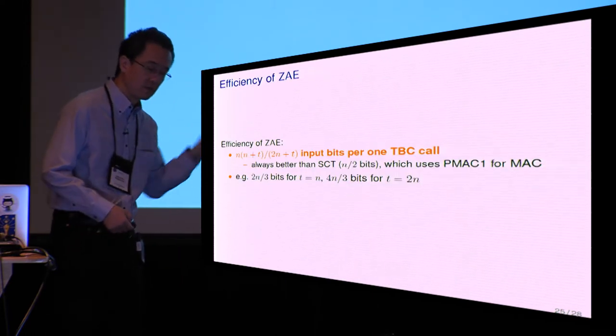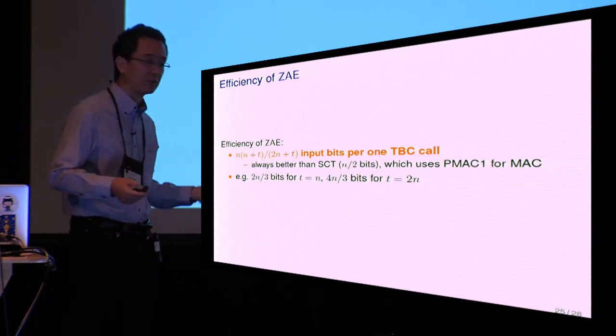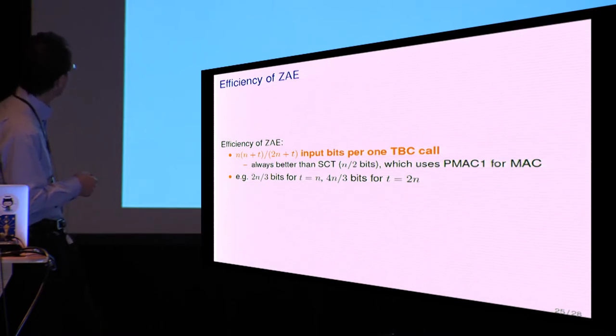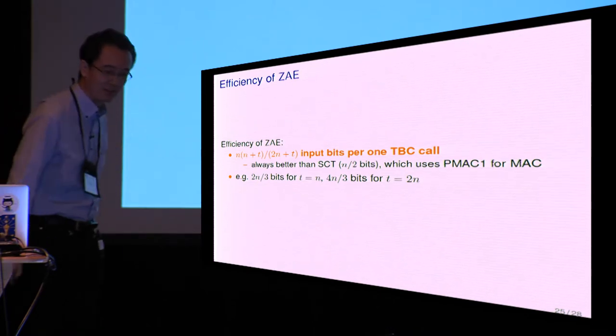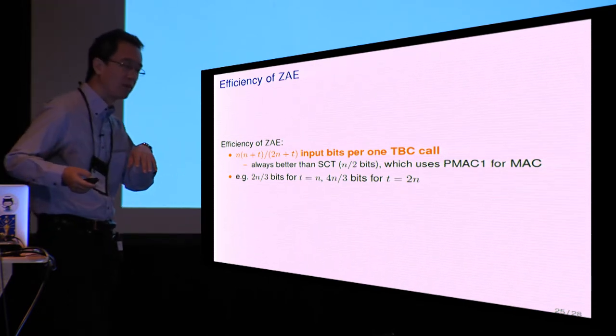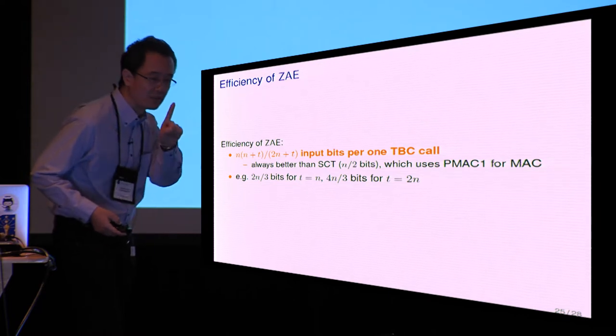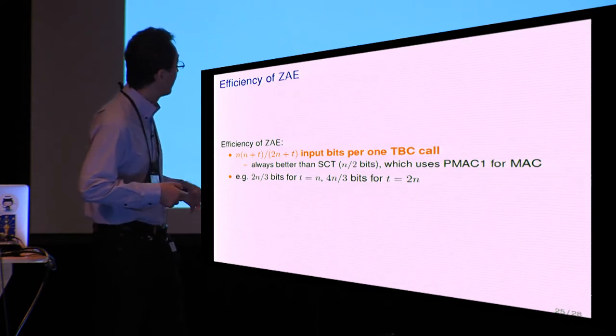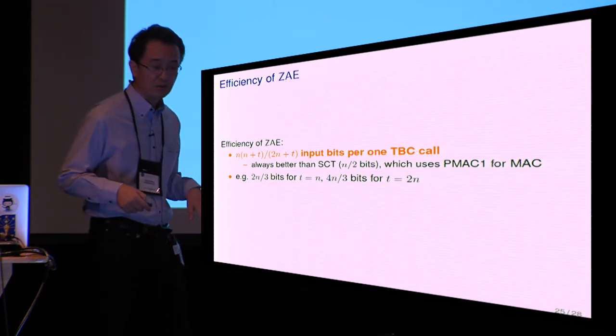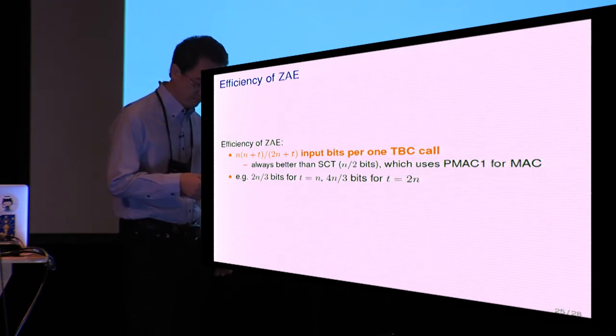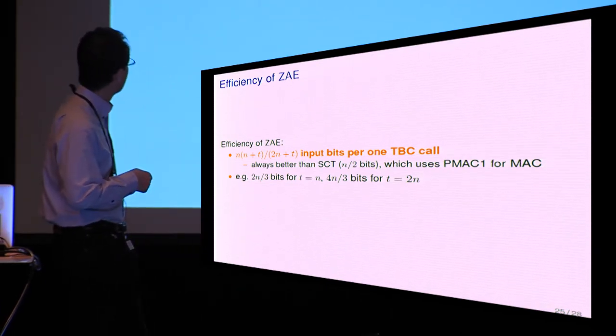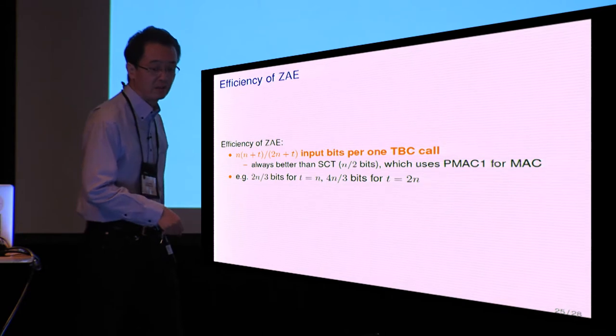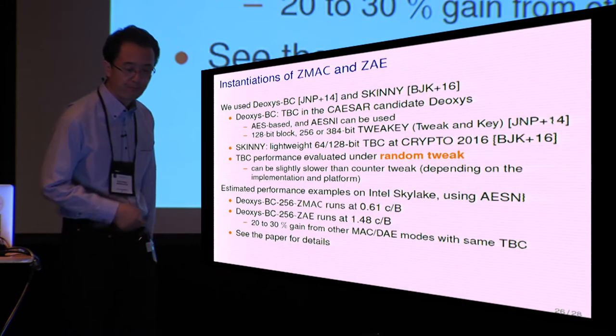For the efficiency of ZAE, I mean, how many input bits can be processed per one TBC call inside ZAE? It is n times (n+t) divided by (2n+t). This looks strange, but this is because the IV-CTRT mode of operation processes n-bit input for one TBC call. And this figure is always better than SIV-TBC whose efficiency is half of n bits because SIV-TBC uses the PMAC1 for MAC function. For example, the efficiency of ZAE is 2n/3 bits if n and T equals n, and if T equals 2n, it is 4n/3.